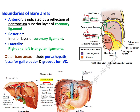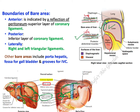The boundaries of the bare area are: superiorly/anteriorly — the anterior layer of the coronary ligament; and inferiorly/posteriorly — the posterior layer of the coronary ligament. The anterior and posterior layers of the coronary ligament meet laterally, either on the right or on the left, creating ligaments of triangular shape. These are called the right triangular ligament and the left triangular ligament.